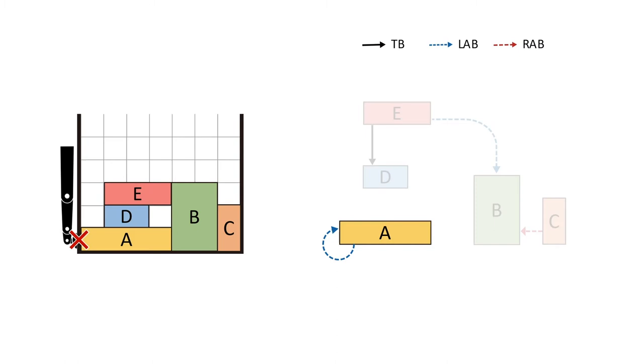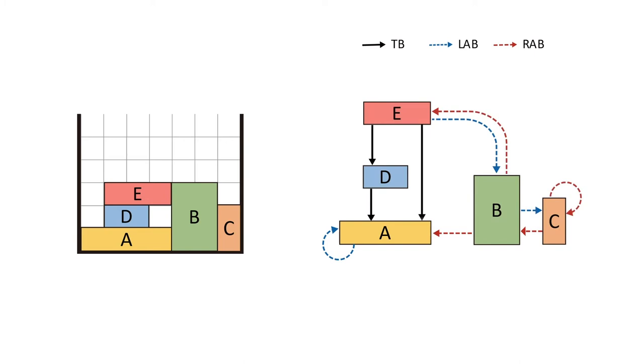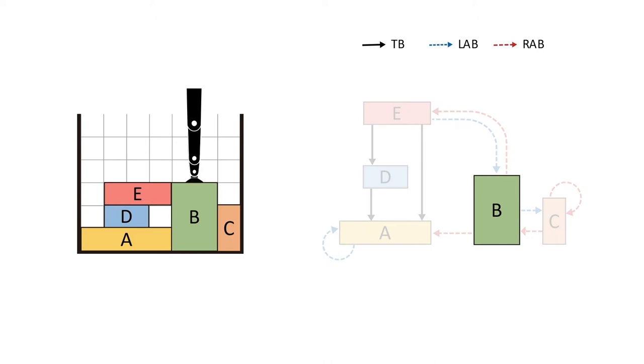The only condition for packing any object in its original orientation is that there is no TB edge pointing to it, so B can be packed in its given state. However, to pack a box under a rotated state, we need to further require there is no objects blocking the access to its left or right side. So if E is transported and packed, the left side of B becomes accessible and can be lifted and rotated for packing.